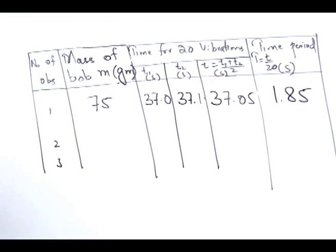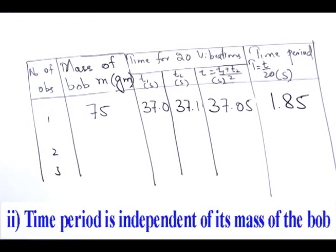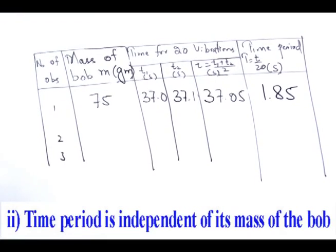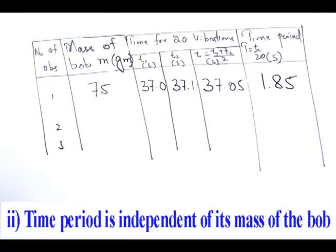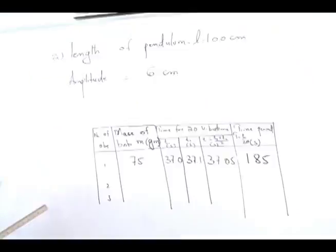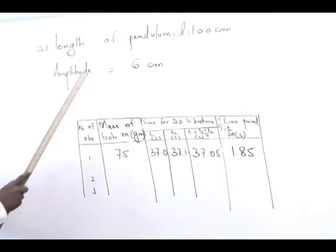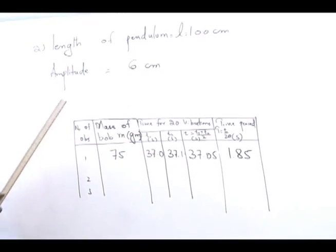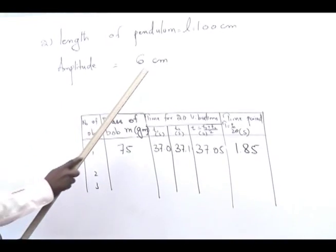We now verify the second law of the simple pendulum: the time period is independent of the mass or density of the ball. In this part, the length of the pendulum is kept constant at 100 centimeters and the amplitude remains fixed at 6 centimeters throughout all observations.